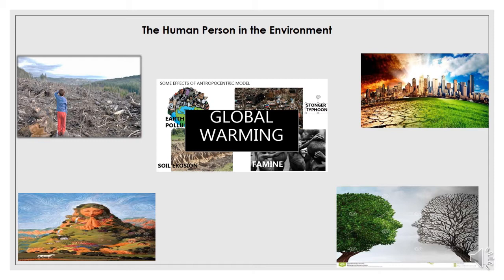The next view is biocentric — it gives equal importance to all organisms on the planet Earth and considers them as having an inherent worth. Then, the ecocentric view emphasizes ecosystem and biological communities and considers humans towards all nature.